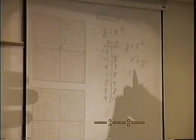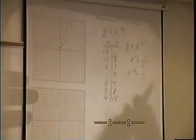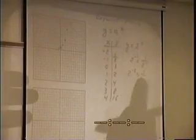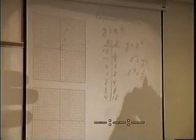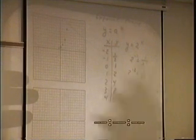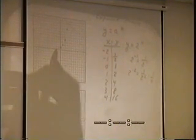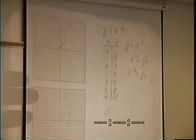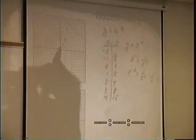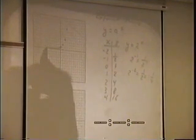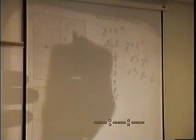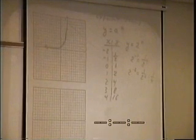Now, if I take 2 to the negative 2, it means 1 fourth, because it's over 2 squared. So that's 1 fourth, and it's right there. If I go to the negative 3, it's 1 eighth. If I go to negative 4, it's 1 sixteenth. It just keeps getting closer and closer and closer to zero. In fact, it gets so close, you can't even hardly tell them apart. And then this one goes up, like so. It's called an exponential graph.